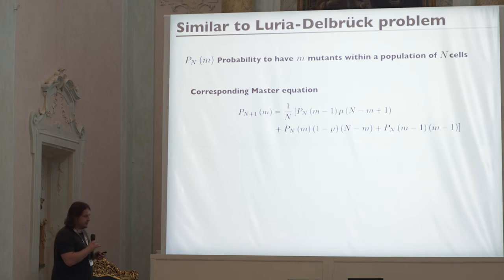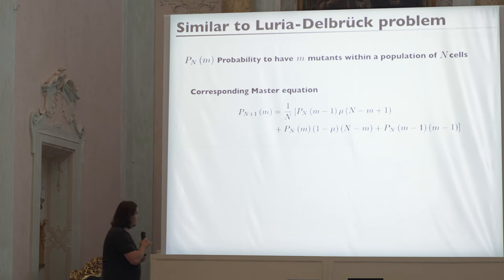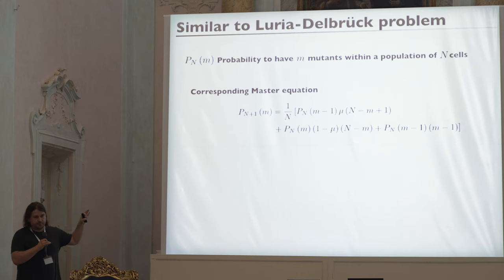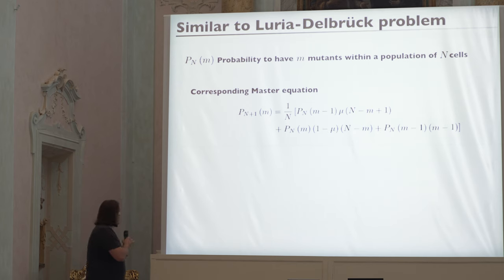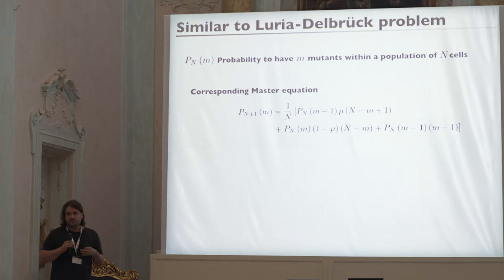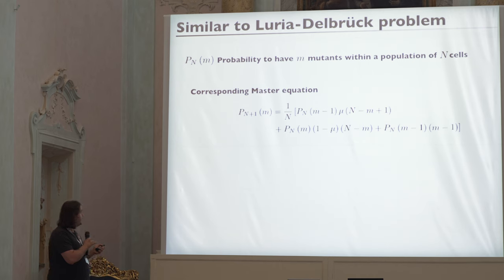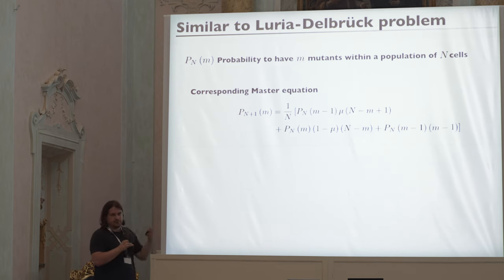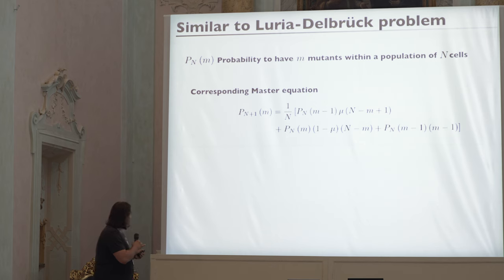We can make this more quantitative by writing down a master equation — what is the change in probability of observing M mutations as the tumor grows from N to N+1 cells? In the simplest case there are three terms: a division with a new mutation at rate mu, a division of an already-mutated cell, and a division of a non-mutated cell. This is a description of mutation accumulation analogous to the Luria-Delbrück framework.